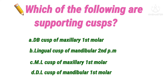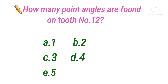Next question: how many point angles are found on tooth number 12? Option A 1, B 2, C 3, D 4, E 5. Using the two-digit numbering system, tooth number 12 is the maxillary right lateral incisor. The number of point angles in anterior teeth is four, so the answer is option D, four.